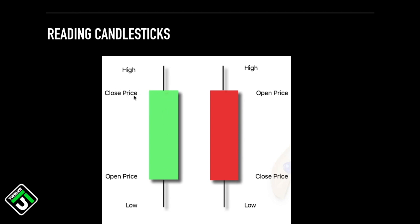If the close is higher than the opening price, it will form a green candle. Once it closes, a new candle forms with a new opening price, it fluctuates up and down, and if the close is lower than the opening price, that candle will form red. Once these candles have closed, they begin to take a shape, and that shape can tell us a lot about what the sentiment was for that time period between buyers and sellers.